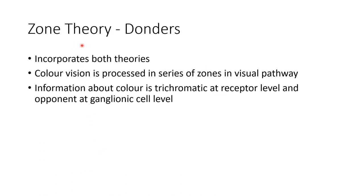Coming to the zone theory, proposed by Davson, it incorporates both theories. It states that color vision is processed in a series of zones in the visual pathway — information about color is trichromatic at the receptor level and opponent at the ganglion cell level.